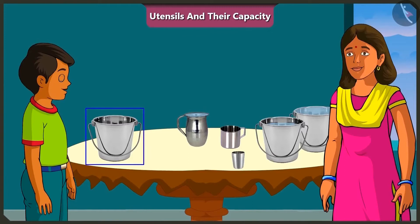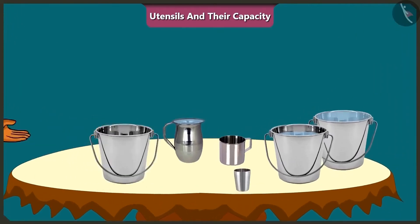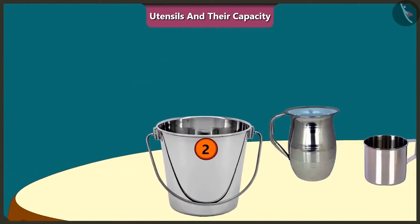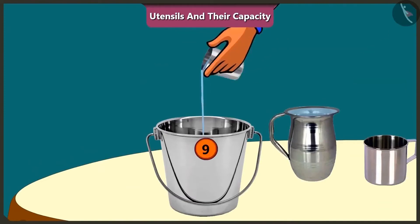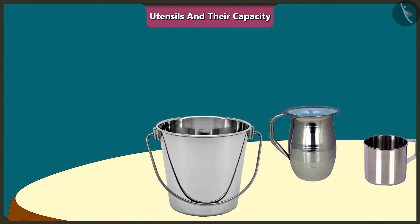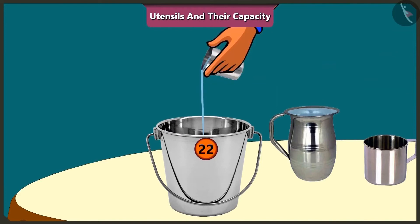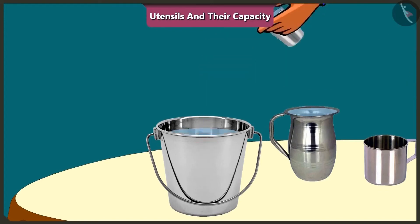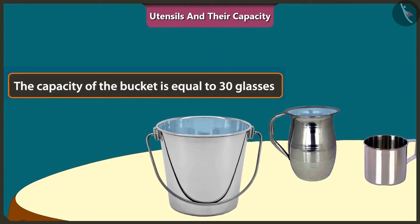Mommy, now to fill this bucket, how many glasses of water would be required? Come on, let's pour and see. 1, 2, 3, 4, 5, 6, 7, 8, 9, 10, 11, 12, 13, 14, 15, 16, 17, 18, 19, 20, 21, 22, 23, 24, 25, 26, 27, 28, 29, 30. To fill this bucket completely, we have to pour 30 glasses of water in it. So, the capacity of this bucket is equal to 30 glasses of water.